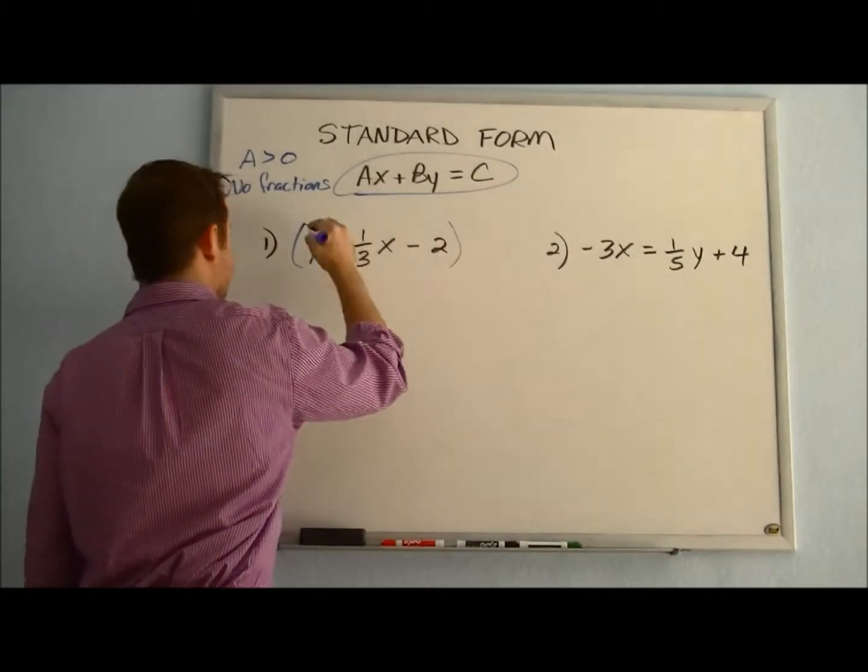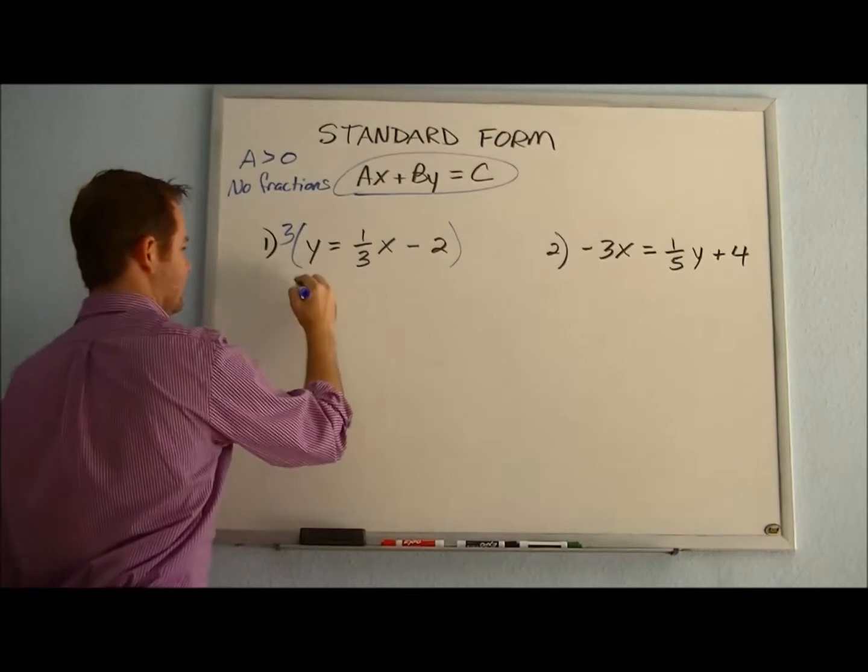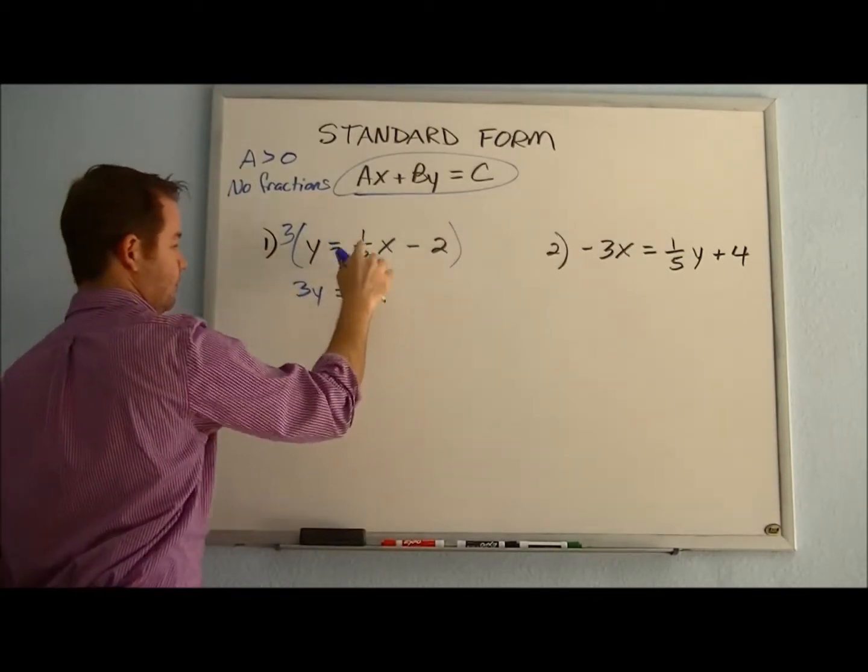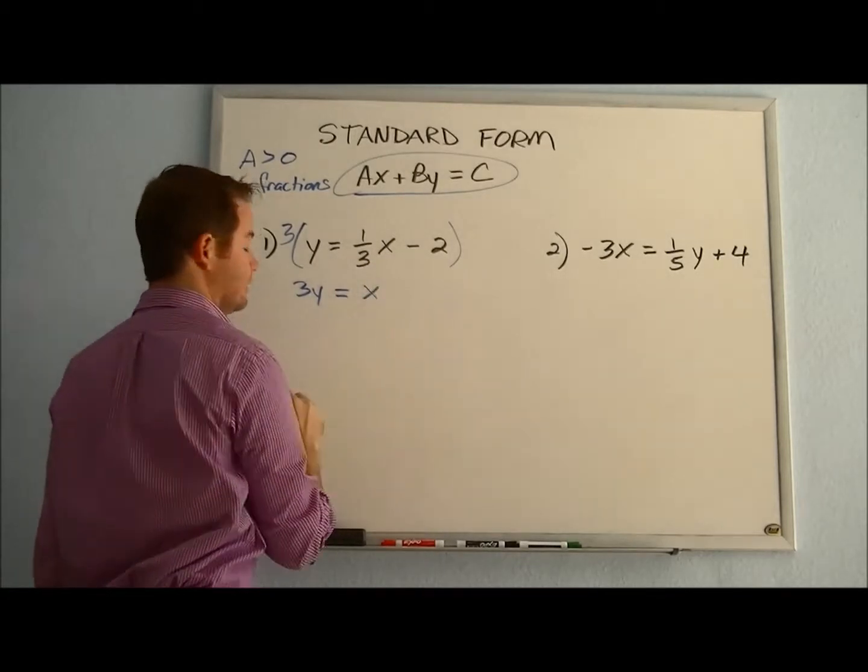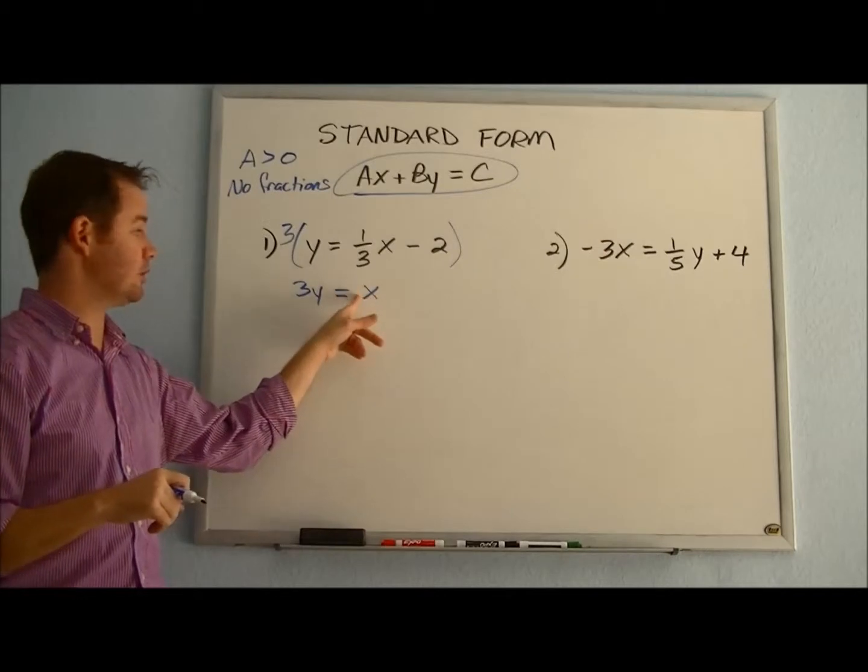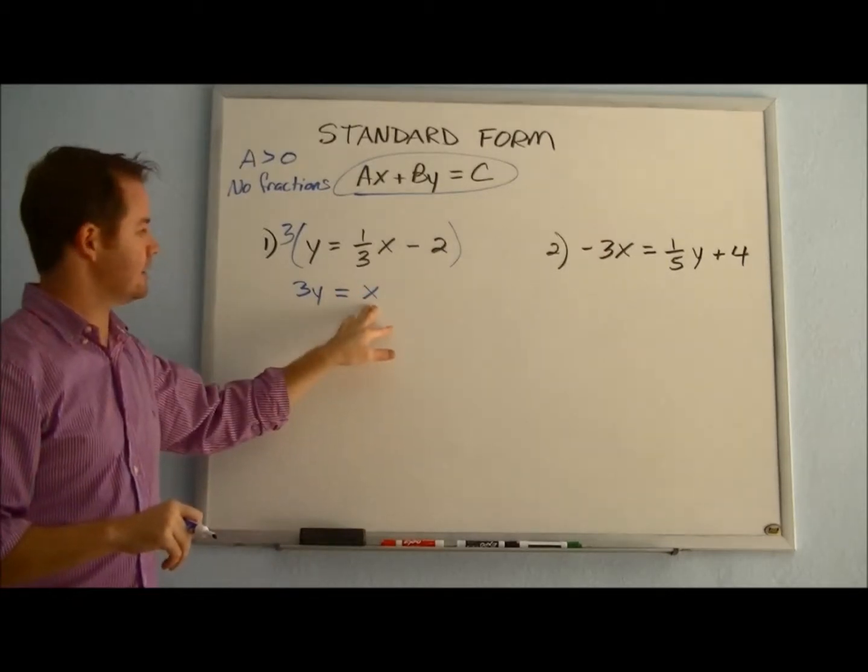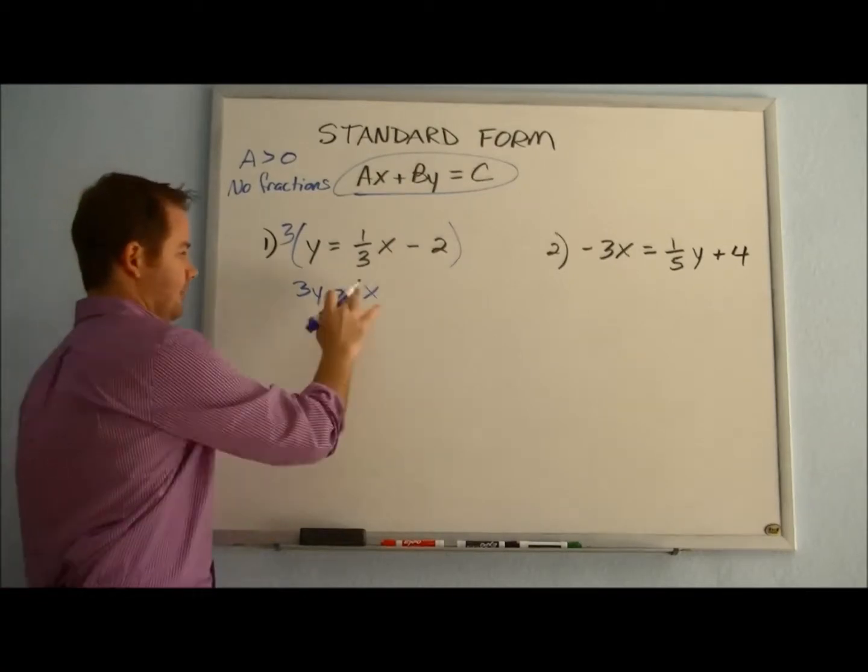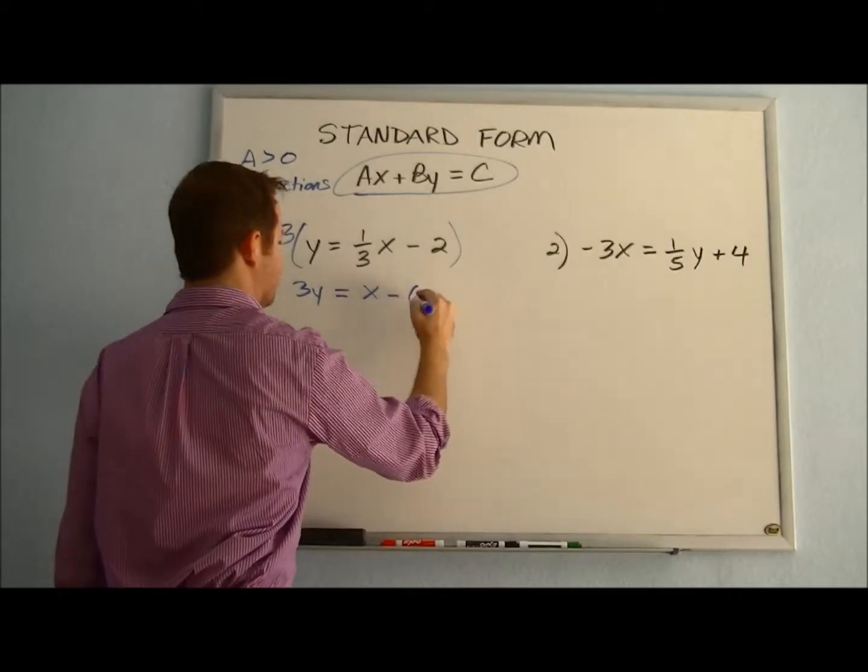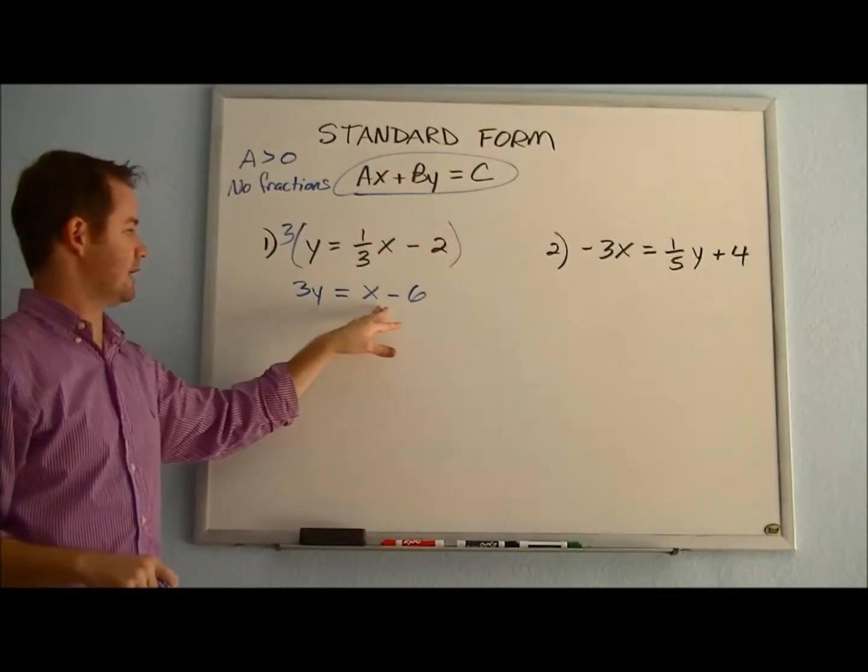And when we do that, we distribute the three to every term. So we have 3 times y. When we multiply 1/3 times 3, the threes cancel. So we're left with 1x, which you can just write as x. Or if you're more comfortable, you can put the coefficient in front to keep track of it. But it's a little bit easier if we just view it as x by itself, rather than adding in the extra number. And then when we multiply -2 times 3, we get -6. So here we have 3y = x - 6.